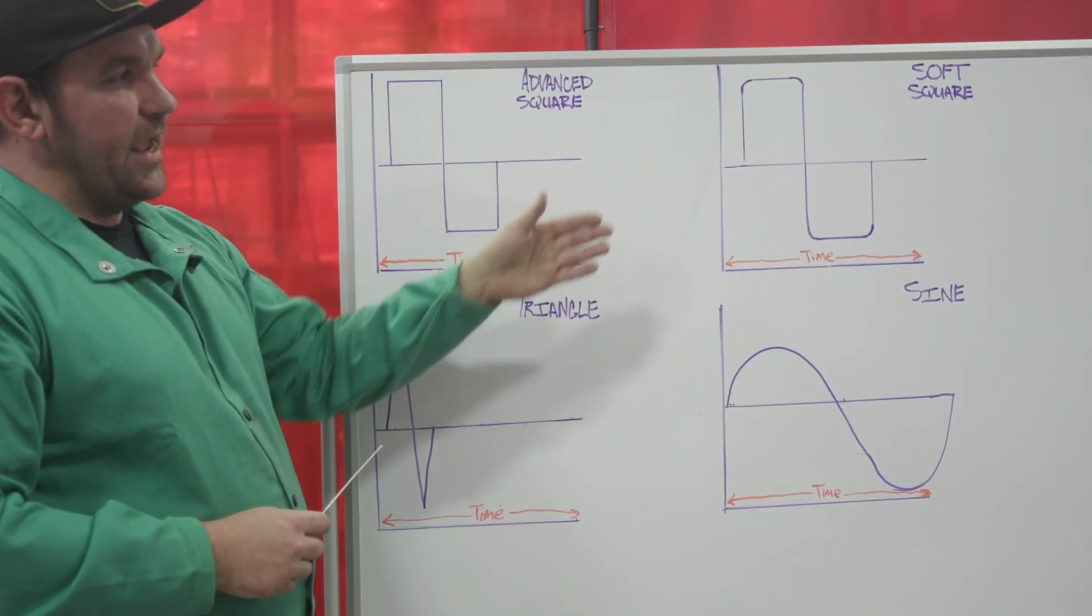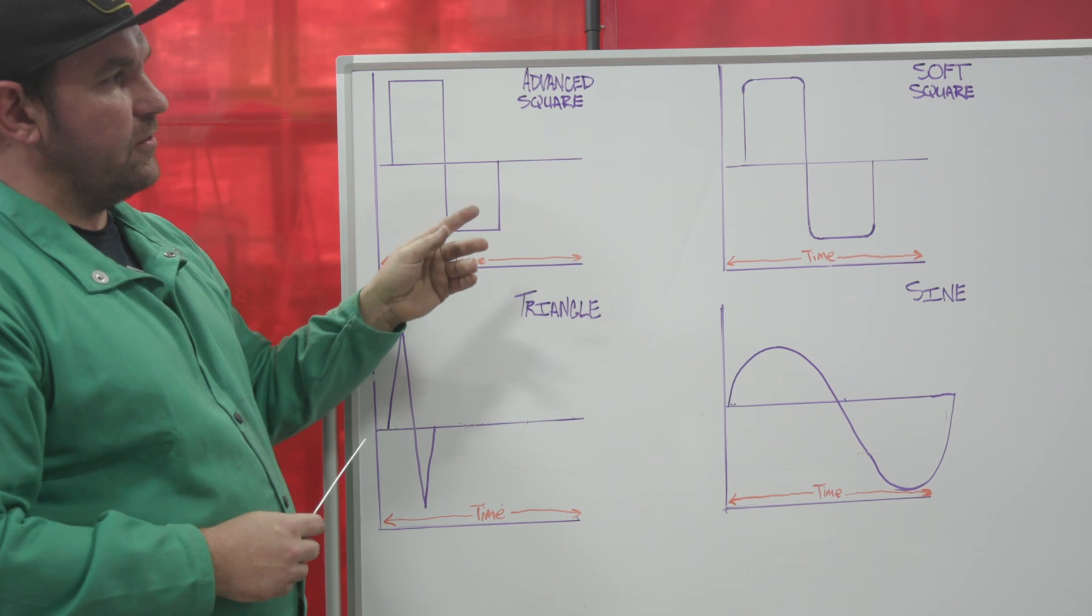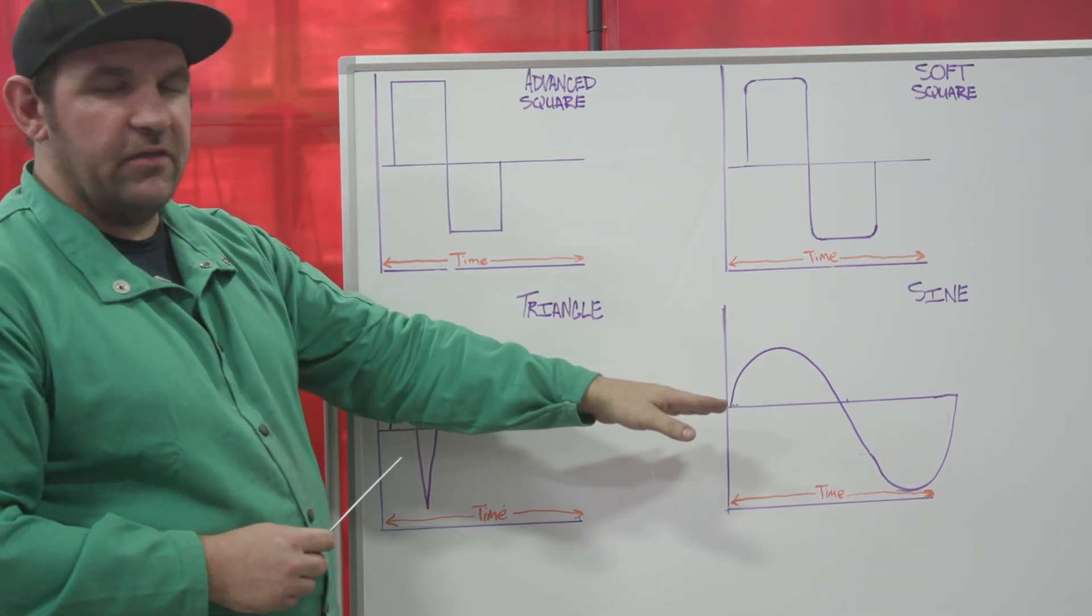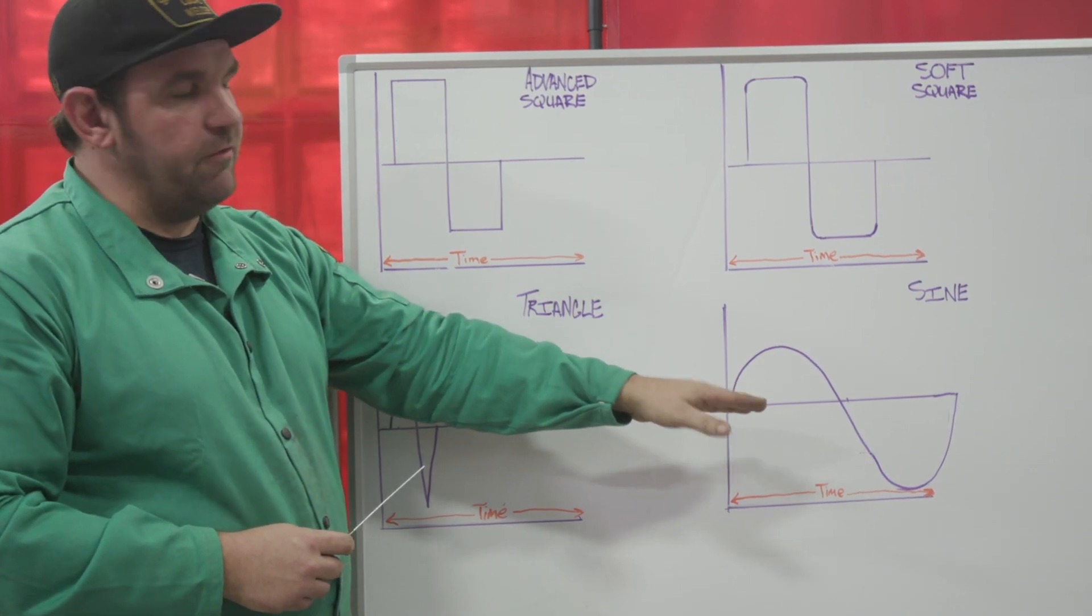Up here on the board we've got all four AC waveforms: advanced square, soft square, triangle, and sine, which is generally considered the old school transformer waveform.